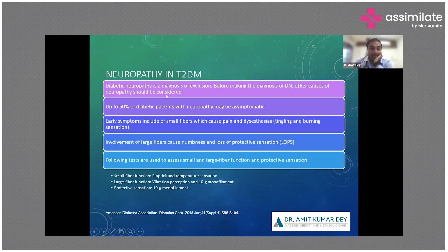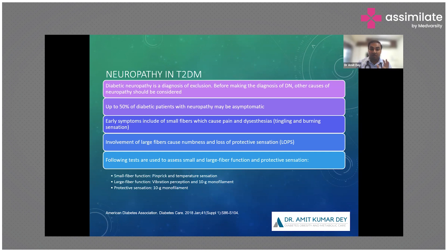In type 2 diabetes, diabetic neuropathy is a diagnosis of exclusion — other causes must always be ruled out. An NCV of both lower limbs should be done to exclude nerve entrapment. Up to 50% of diabetic neuropathy may be asymptomatic. Early symptoms involve small fibers causing pain, dysesthesias, tingling, and burning sensation; larger fiber involvement causes numbness and loss of protective sensation, which increases the risk of neuro-ischemic foot ulcers.